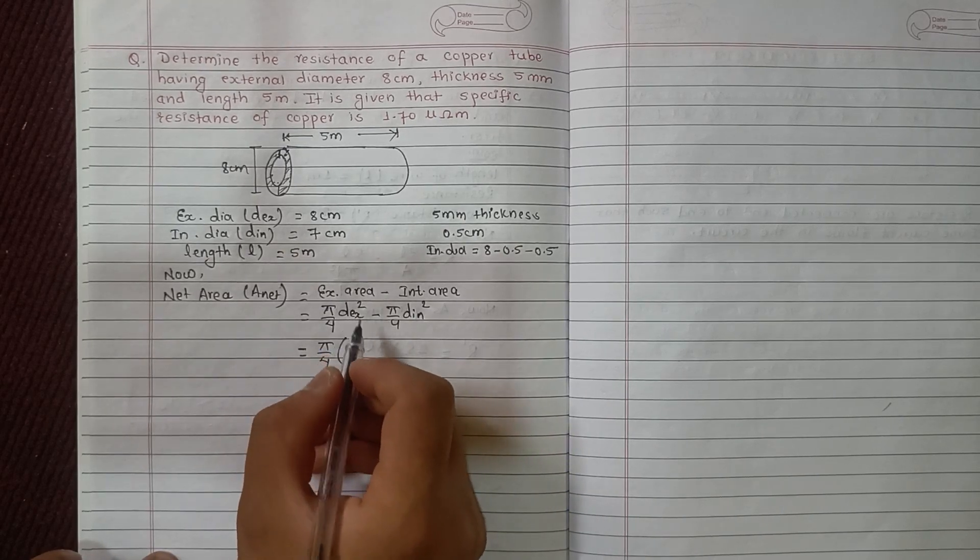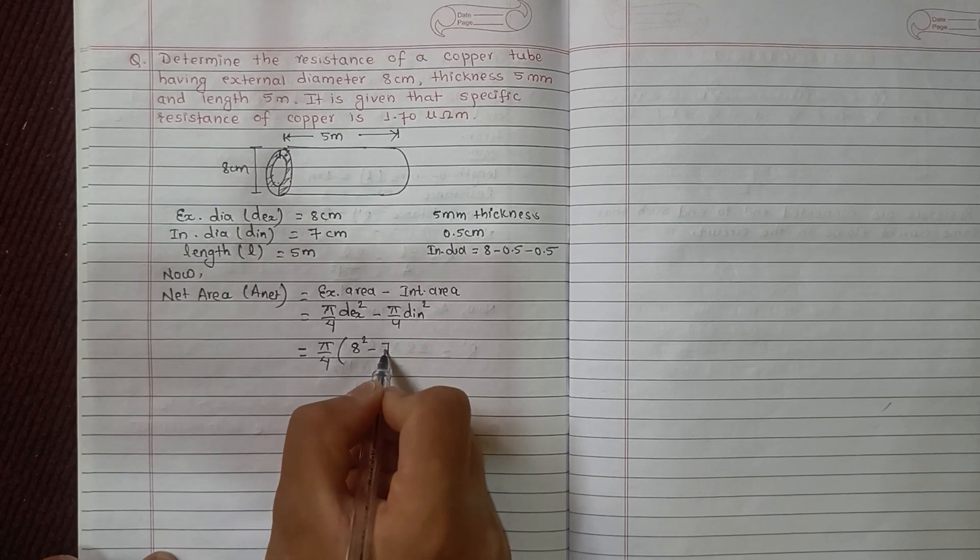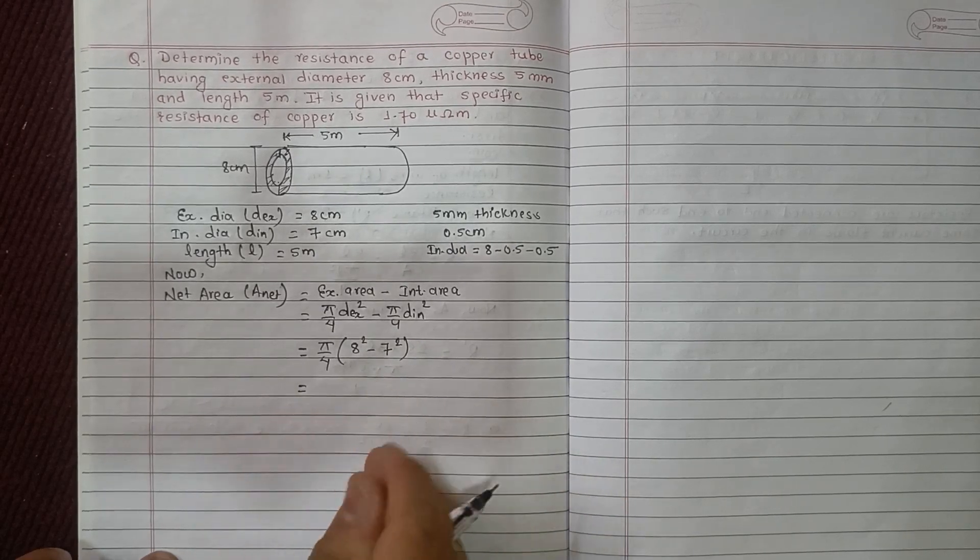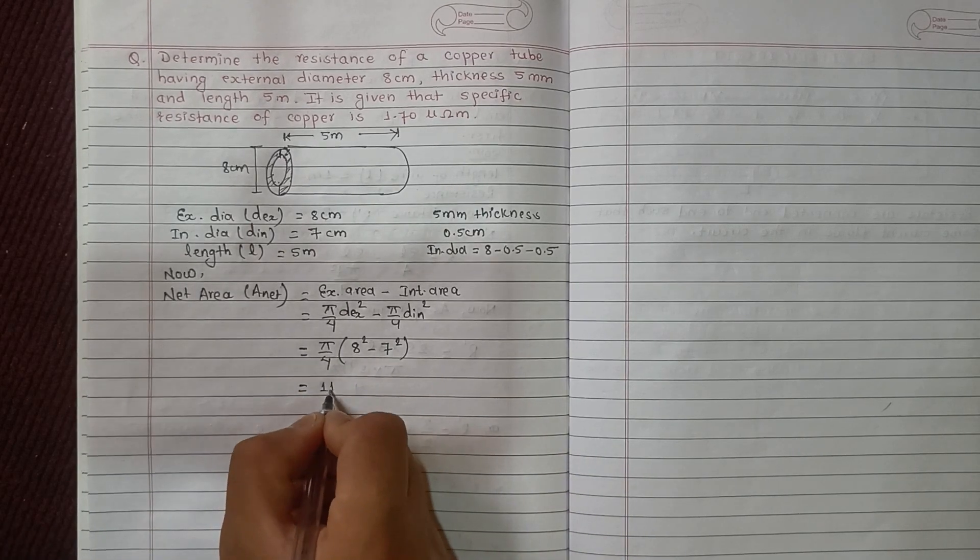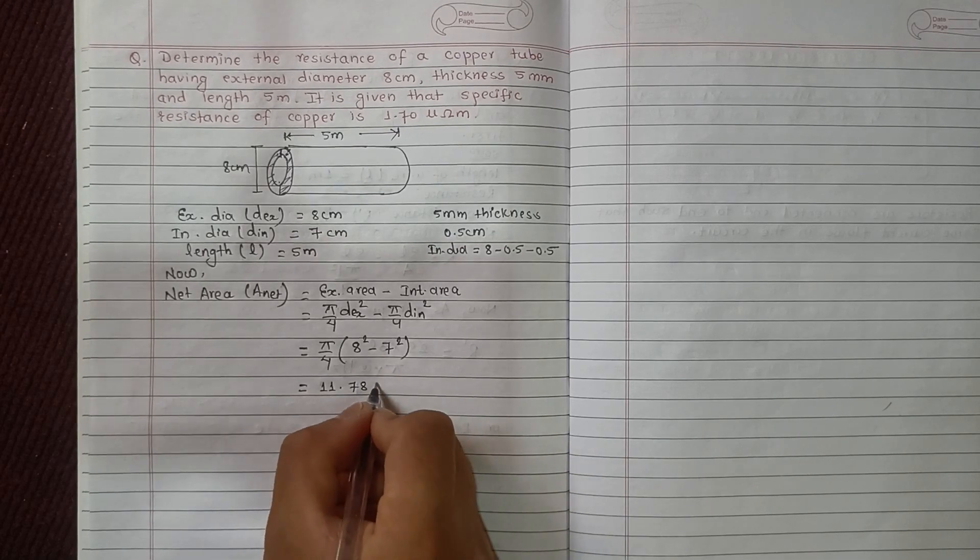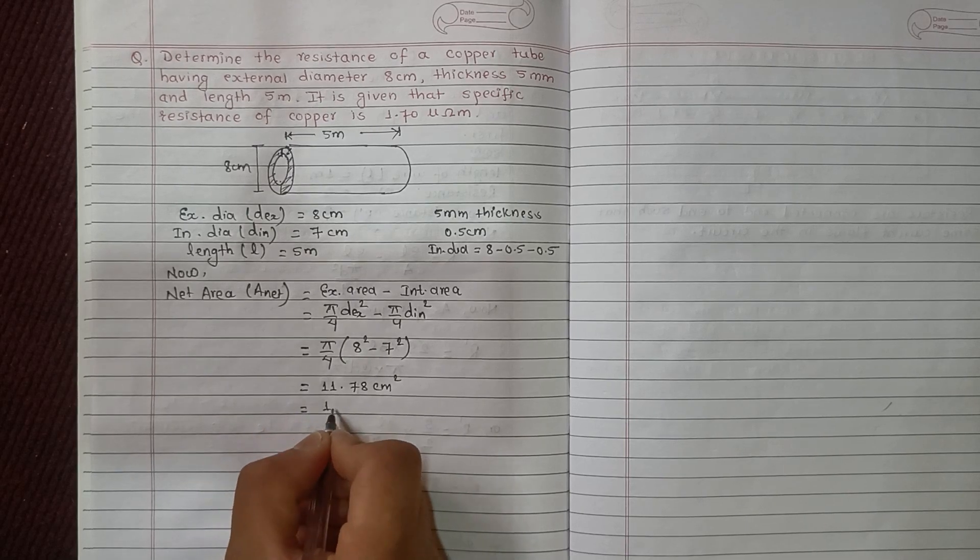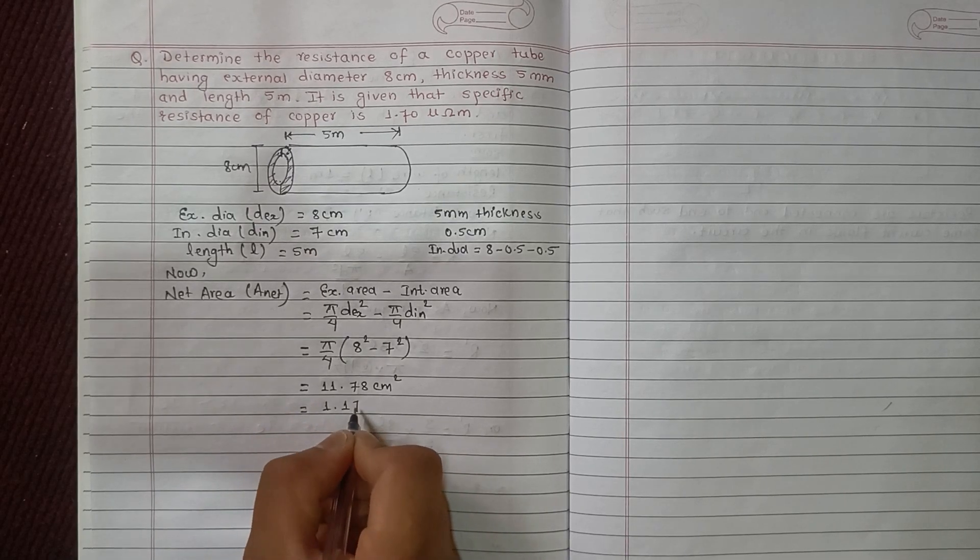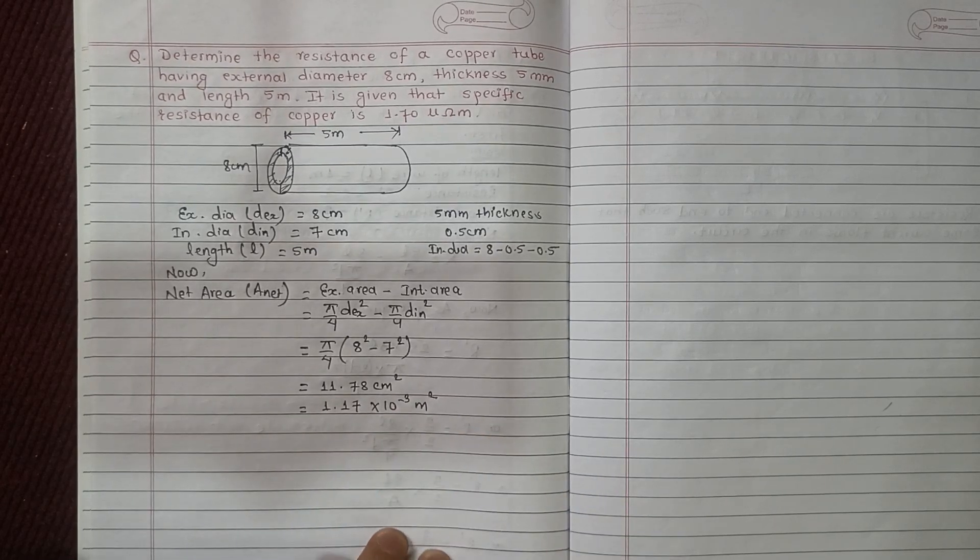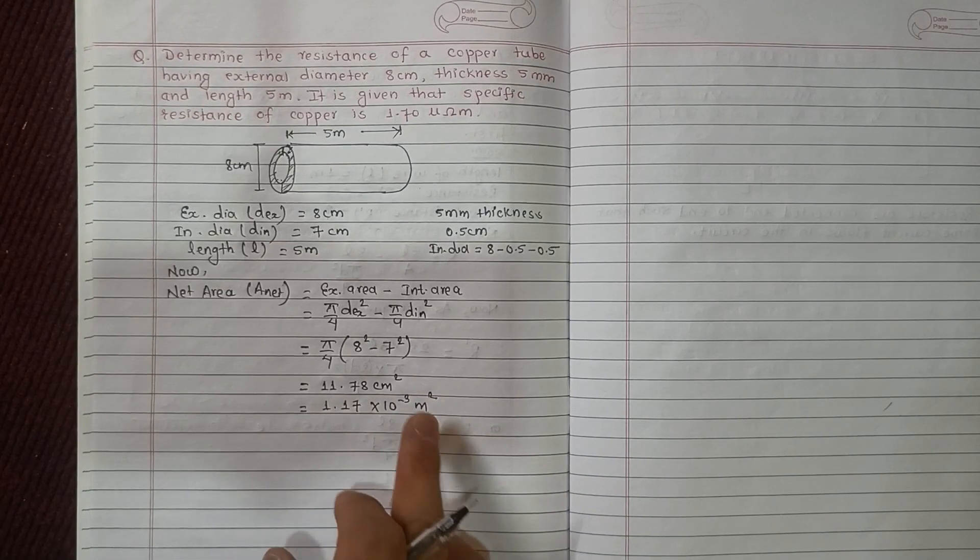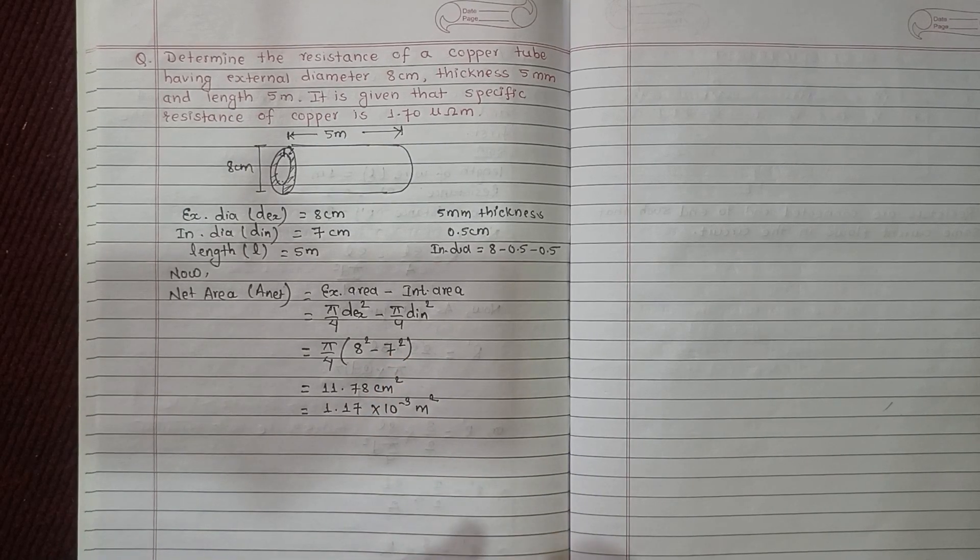That is π/4 common, external diameter is 8 squared minus internal diameter is 7 squared. This gives us 11.78 centimeter square. Converting to meter square, this is 1.178 times 10 to the power minus 3 meter square.